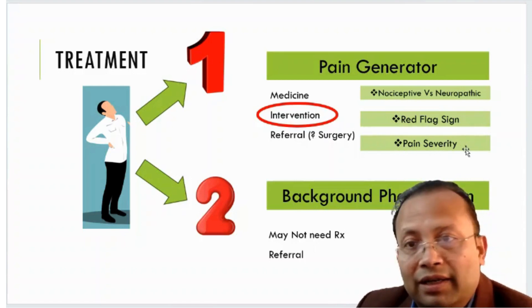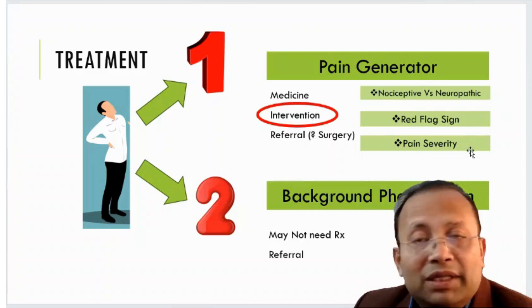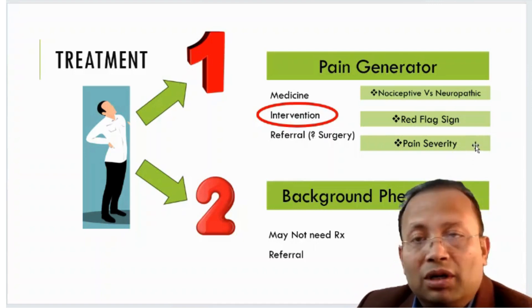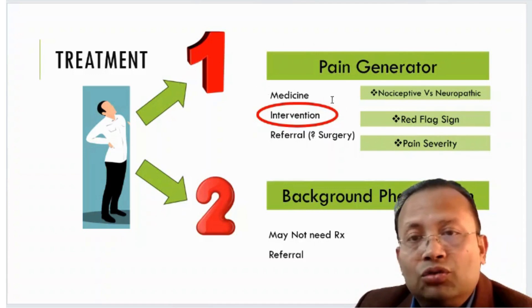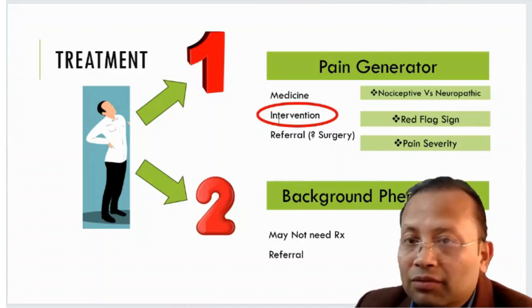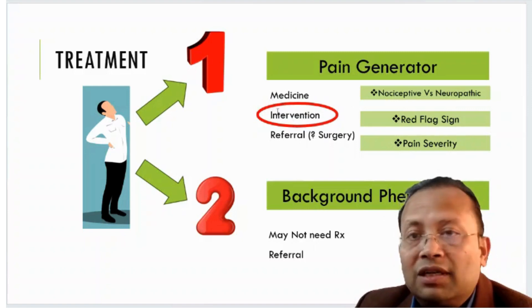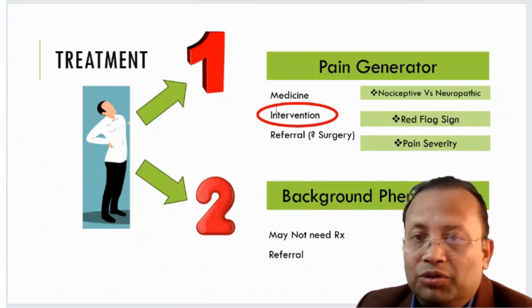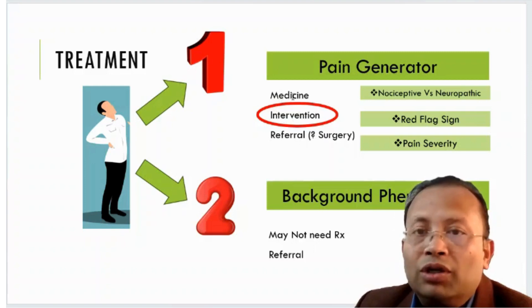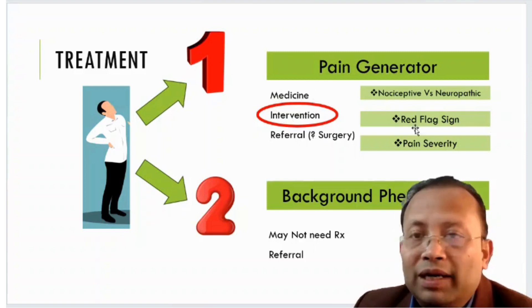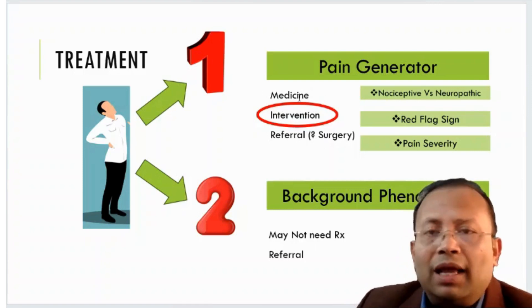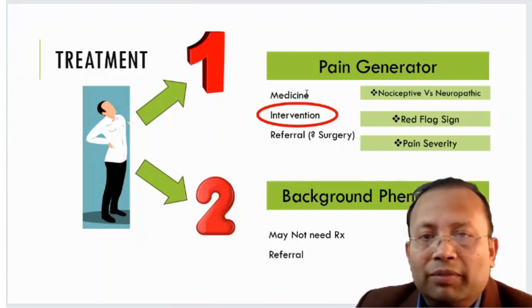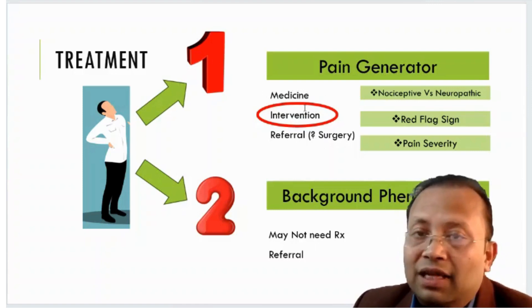Pain severity also guides treatment. A patient may come with mild, moderate, or severe pain. If the patient is in severe pain, we may choose intervention as the immediate treatment option, then continue with medicine. If it is mild to moderate pain, we start with medicine, and only if that fails do we proceed to intervention.